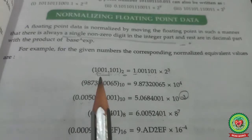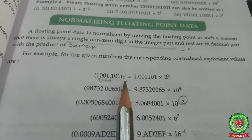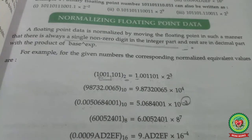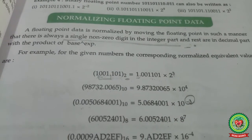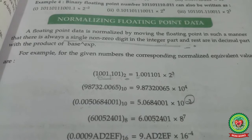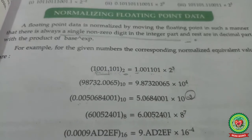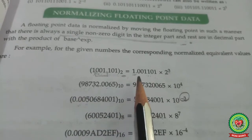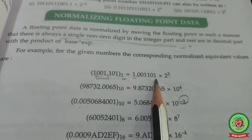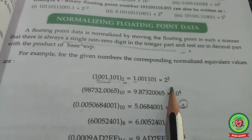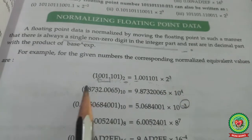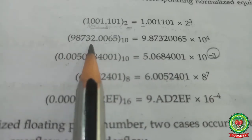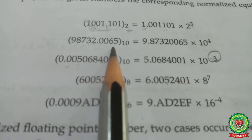Here I have a binary number 1001.101 base 2. According to the rule, I shift the decimal point such that there is always a single non-zero digit in the integer part. I shift the decimal point three places to the left, so my answer is 1.001101 × 2 raised to power 3, as the decimal point shifted left. Let us consider another example: 98732.0065 base 10.